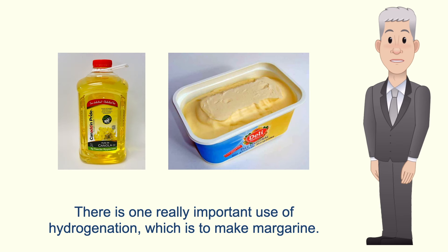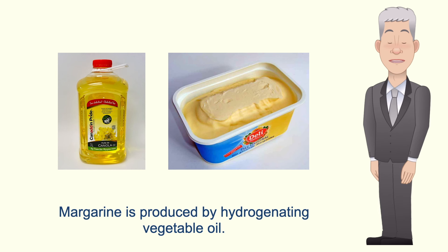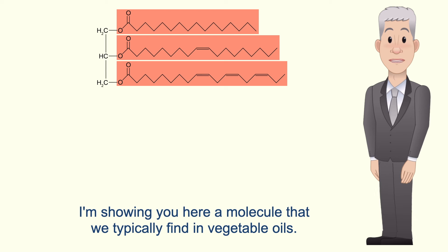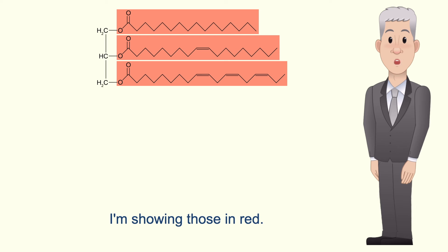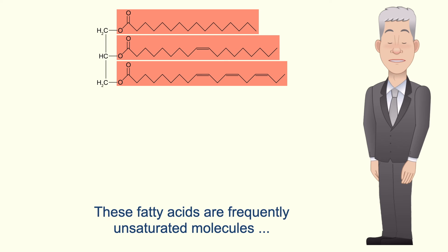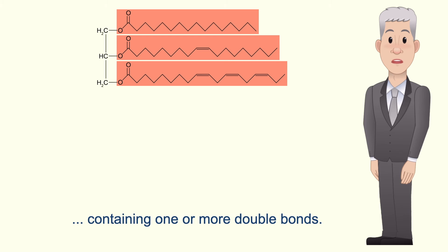Now there is one really important use of hydrogenation, which is to make margarine. Margarine is produced by hydrogenating vegetable oil. I'm showing you here a molecule that we typically find in vegetable oils. These molecules contain fatty acids, and I'm showing those in red, and these fatty acids are frequently unsaturated molecules containing one or more double bonds.